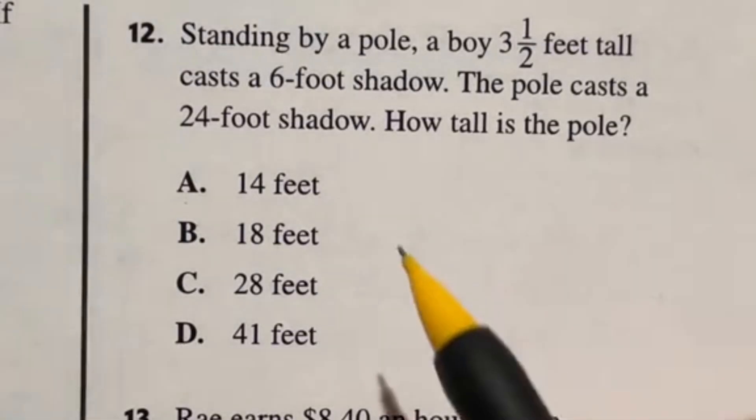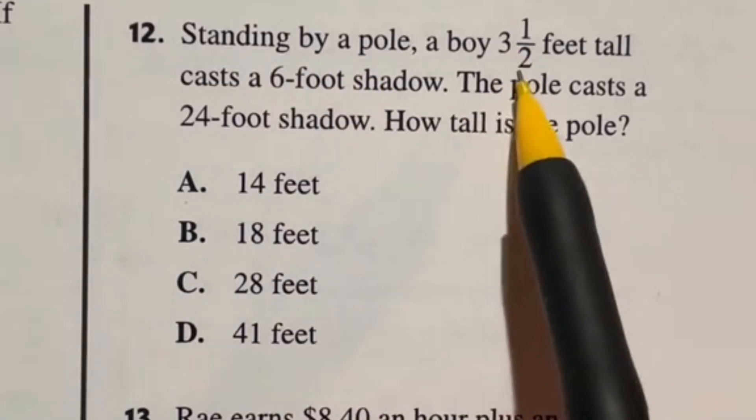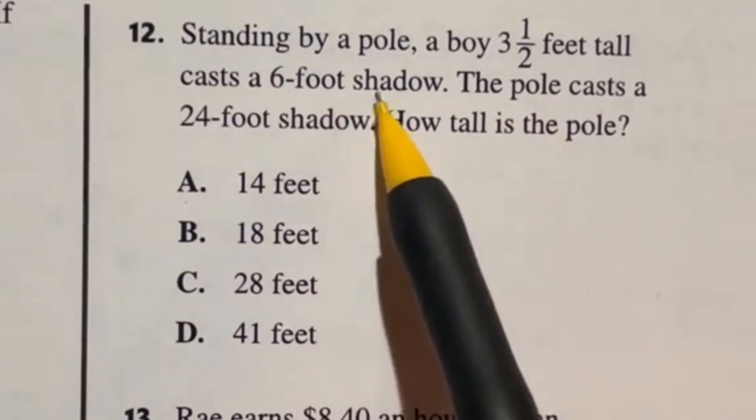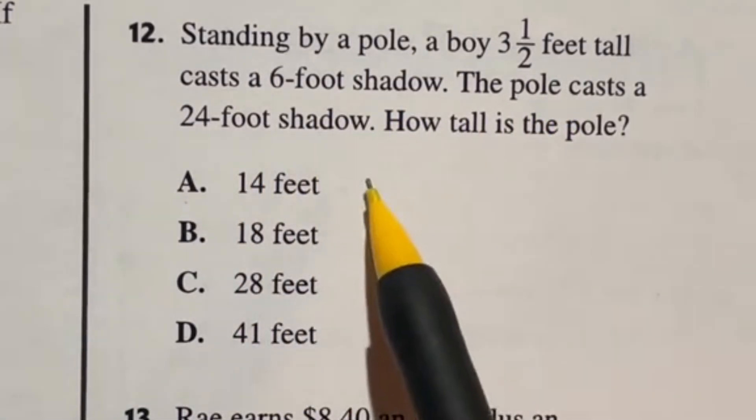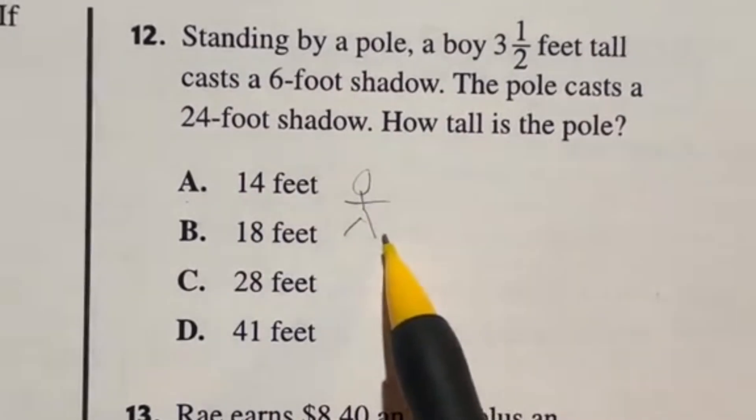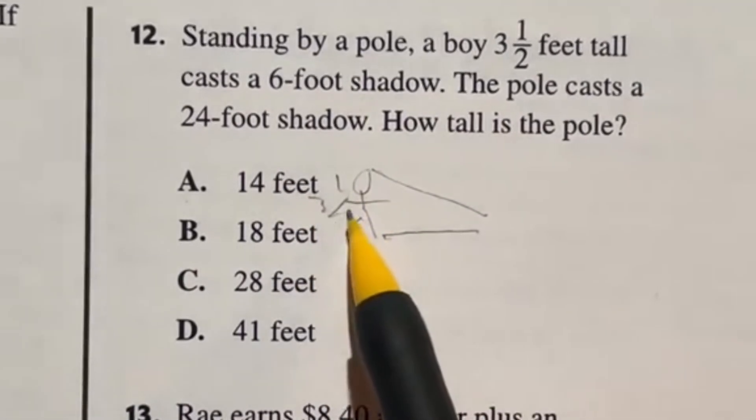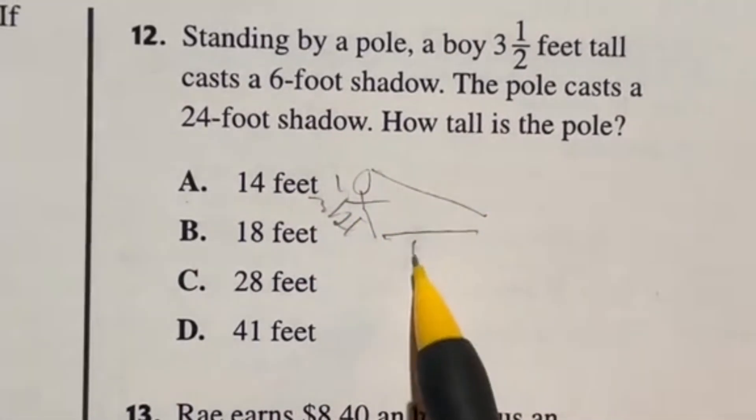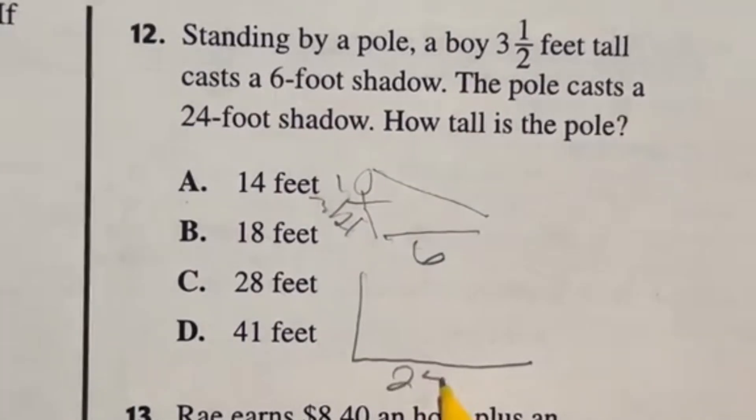Number 12 on the ASVAB is a ratio question. It says here, standing by a pole, a boy three and a half feet tall casts a six foot shadow. The pole casts a 24 foot shadow. How tall is the pole? So we got a boy casting a shadow. There's your triangle. Three and a half for him. And he has a six foot shadow. Then you got this giant pole, 24 foot.